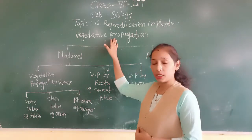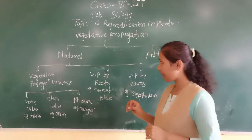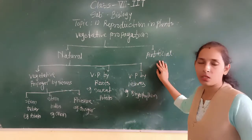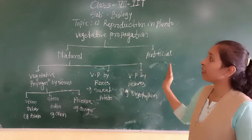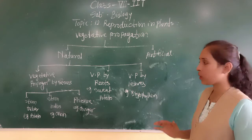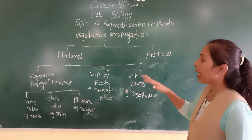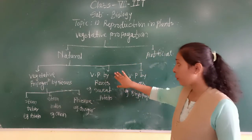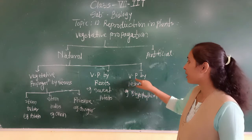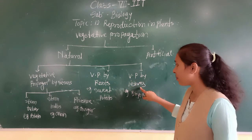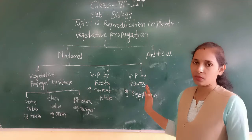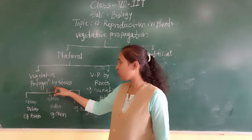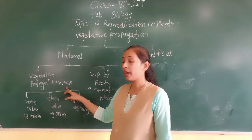Vegetative propagation is again sub-classified as natural vegetative propagation and artificial method of vegetative propagation. In the natural vegetative propagation, there are sub-points: vegetative propagation by stem, vegetative propagation by roots, and vegetative propagation by leaves. We are going to see all these sub-categories deeply one by one. First, we will start with vegetative propagation by stems.